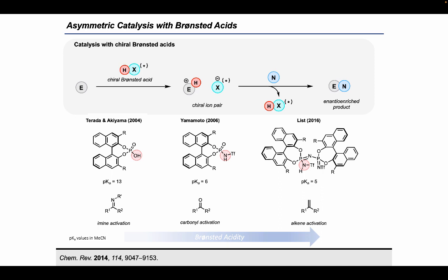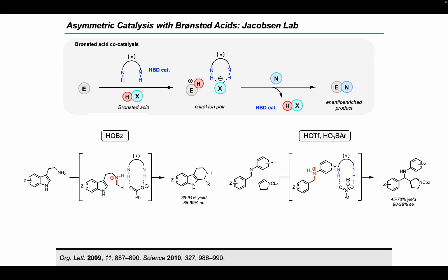To effectively activate carbonyl-based substrates, and nowadays even alkenes, has required the modification of these types of scaffolds to increase their acidity. And that certainly has been done in a very compelling and exciting way. As an alternative to rendering the catalyst itself more acidic, our group, the Jacobson lab, has been focused on the use of cooperative catalysis to control the chemistry of achiral Brønsted acids.